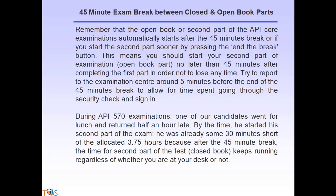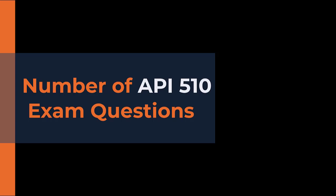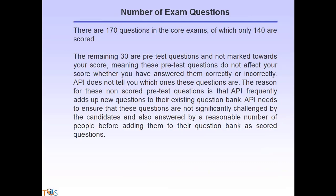The open book second part of the API core examination automatically starts after the 45-minute break, or sooner if you press to begin. The exam has 170 questions total, of which 140 are scored. The remaining 30 are pretest questions that do not affect your score. API does not tell you which questions are scored or non-scored, as pretest questions are used to validate new questions before adding them to the permanent scored question bank.